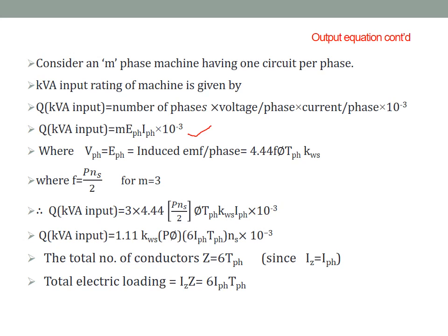Consider an M-phase machine having one circuit per phase. The KVA rating is given by Q KVA input = M × EpH × IpH × 10⁻³, where 10⁻³ converts volt-amperes to kilo-volt-amperes. So Q KVA input = M·EpH·IpH × 10⁻³, where EpH = VpH = 4.44·F·Φ·TpH·Kw — the same equation used in transformers — and for induction motors, F = P·Ns / 2. For M = 3 (three-phase), substituting M = 3 and F = P·Ns/2, then rearranging, terms cancel.